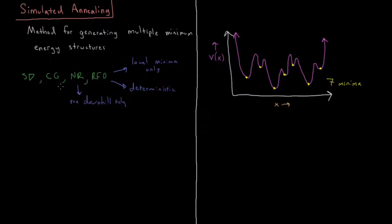So this is all in contrast to simulated annealing, which differs in all of those respects. So simulated annealing, if you run it multiple times, can find multiple different minima, multiple different low energy structures.